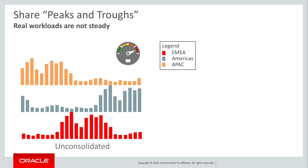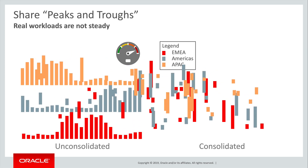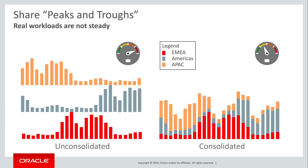Now, if we were to run each of these workloads in a standalone server, we'd need three servers, each able to handle its division's peak workload. In a consolidated environment, we only need to size the server for the aggregate peak workload. Because the various peaks do not coincide, this is significantly less than three times the individual peaks. In this example, we can see that the highest aggregate workload requires less than two-thirds of the combined capacity of the unconsolidated systems. Consolidation using VMs or stacked databases in a single server allows for some elastic sharing of CPU between workloads, but not memory. It is very important to note that, with multi-tenant, this ability to share resources elastically applies both to CPU and memory.